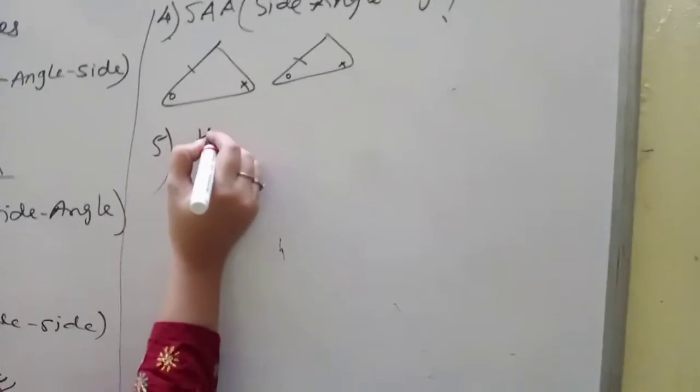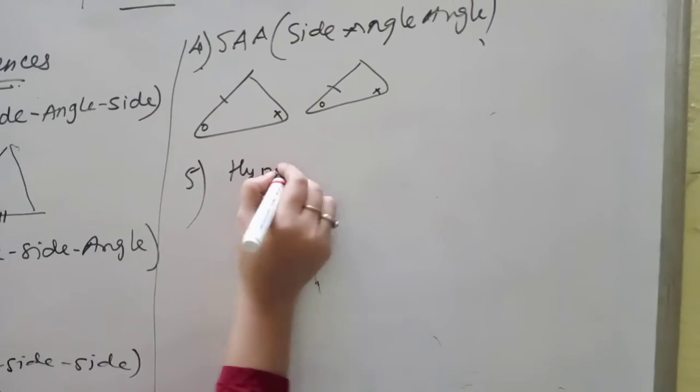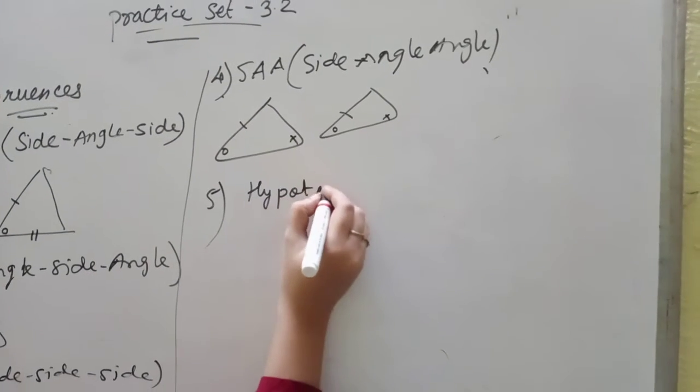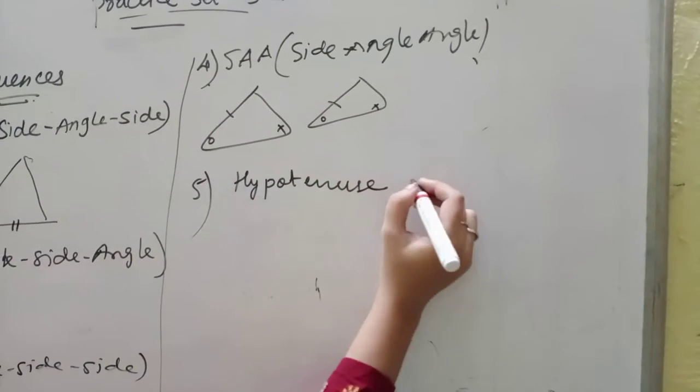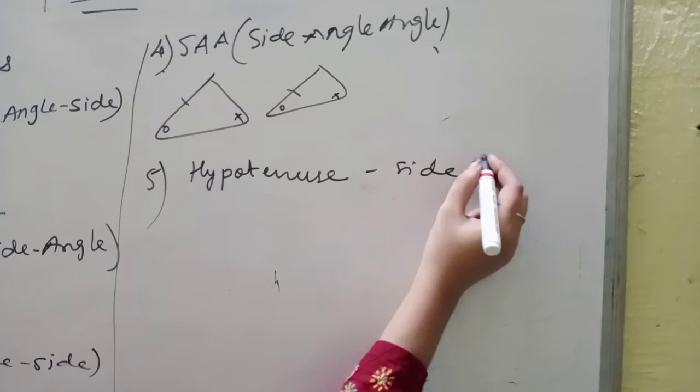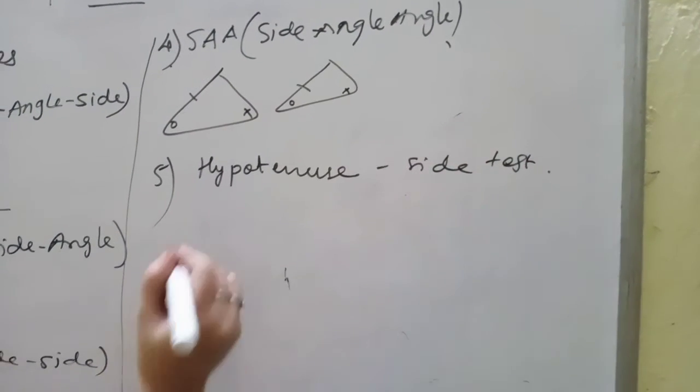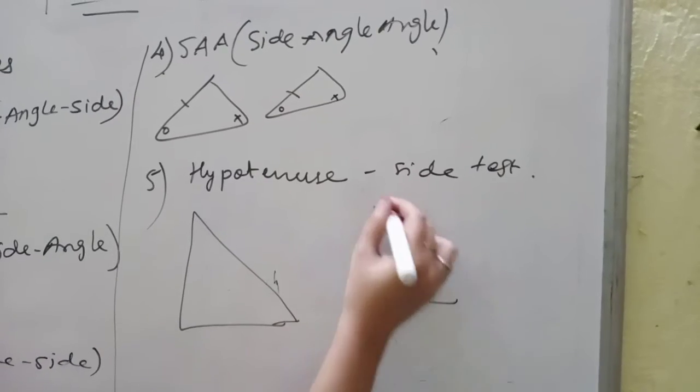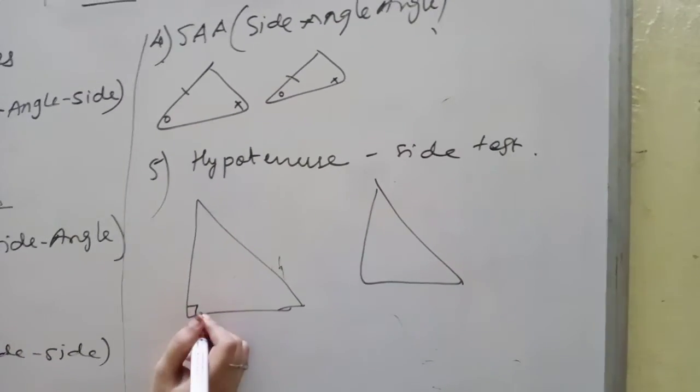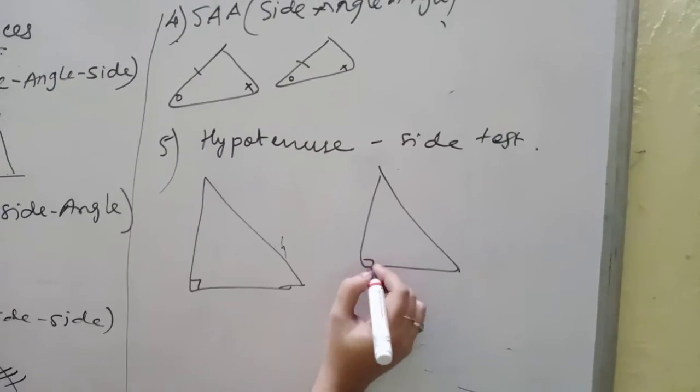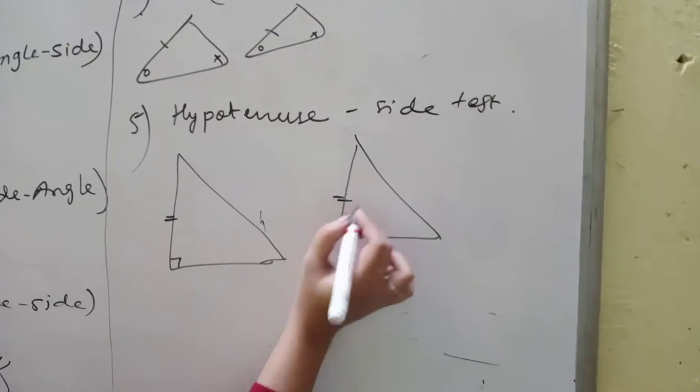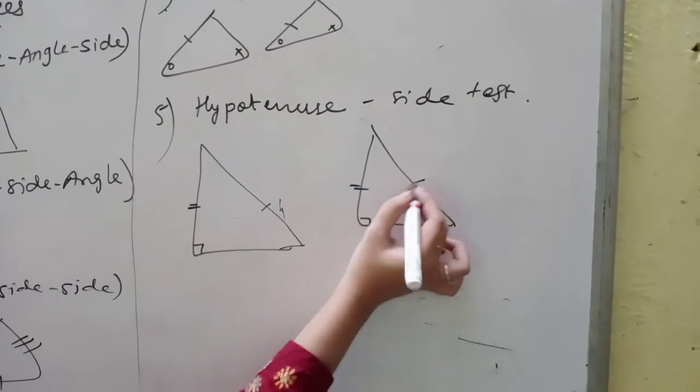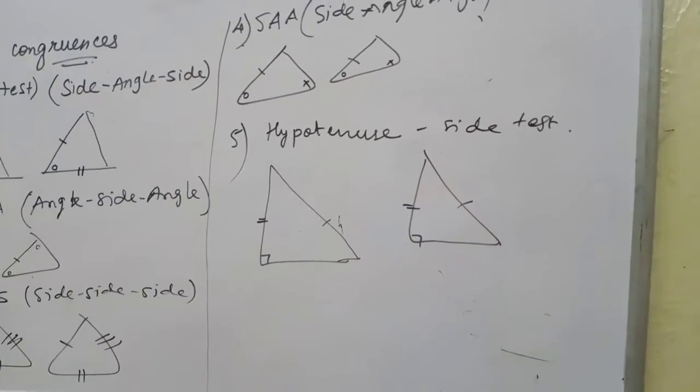The next one is Hypotenuse-Side. When it comes to 90 degrees, it will be hypotenuse. Where it comes to this side is similar to this side, this is angle, and this side is similar to this side. This is hypotenuse side.